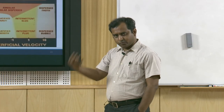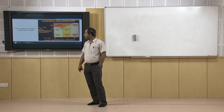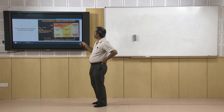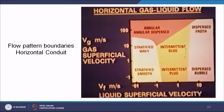To summarize the horizontal flow patterns on a regime map: with liquid superficial velocity on the abscissa and gas superficial velocity on the ordinate, increasing liquid velocity from stratified smooth gives intermittent plug and dispersed bubble flows. Increasing gas velocity from stratified smooth gives stratified wavy and annular dispersed flows. At intermediate velocity ranges, intermittent slug flow is found, and at very high gas and liquid velocities, dispersed froth flow is obtained.